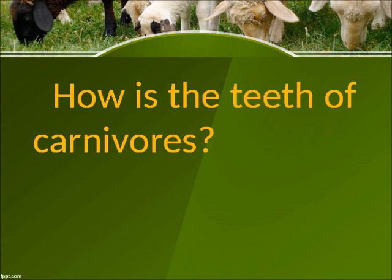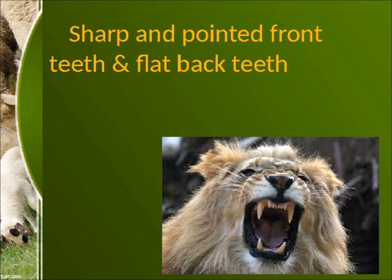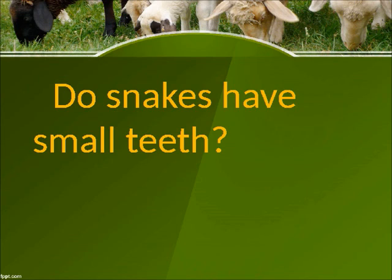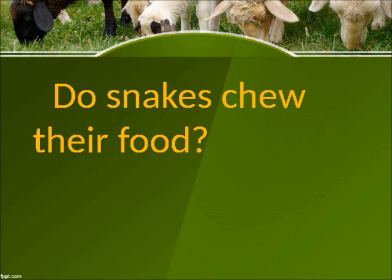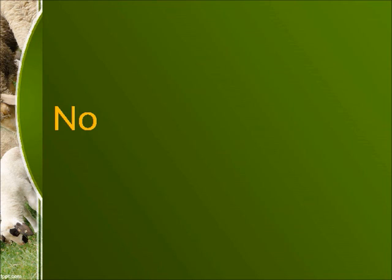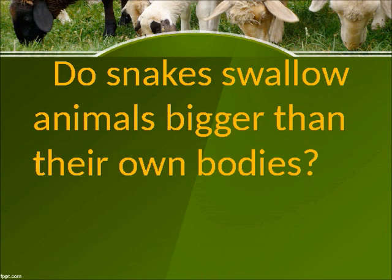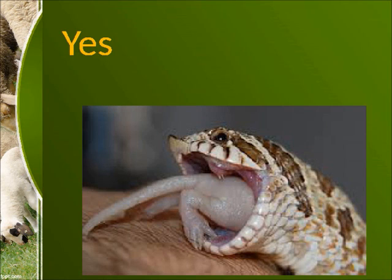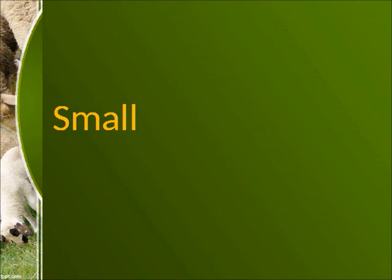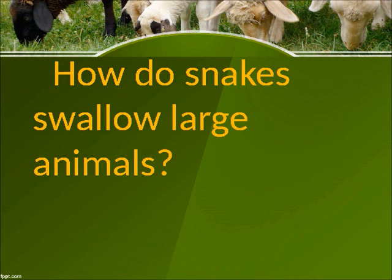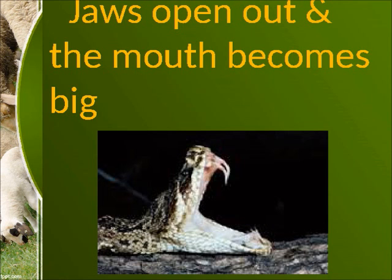How are the teeth of carnivores? Sharp and pointed front teeth and flat back teeth. Do snakes have small teeth? Yes. Do snakes chew their food? No. Do snakes swallow animals bigger than their own bodies? Yes. How is a snake's mouth? Small. How do snakes swallow large animals? Their jaws open out and the mouth becomes big.